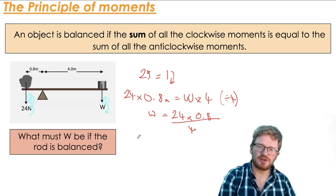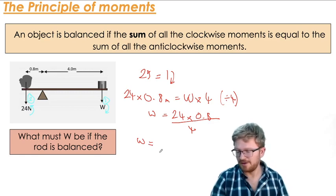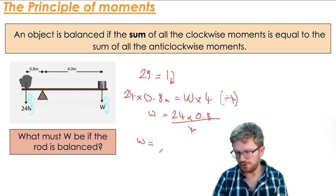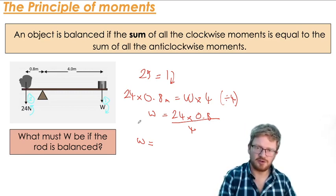And I'm just going to plug that into a calculator because, as I've told you on many occasions, I'm really rubbish at mental maths. So 24 times 0.8 divided by 4. That comes to 4.8. And I need to give the unit, so 4.8, and that is newtons multiplied by meters, so it's 4.8 newton-meters.